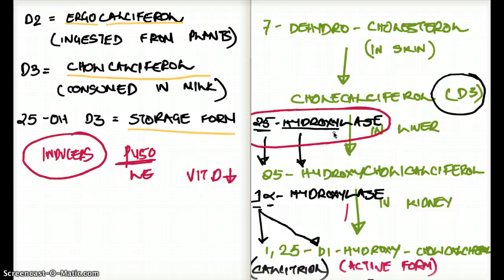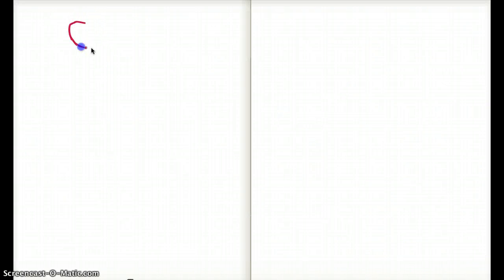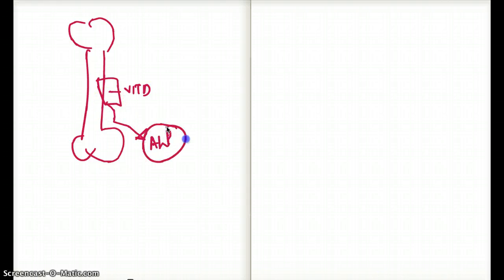The last thing I want to talk about is the relationship of PTH, osteoblast, osteoclast, and vitamin D. Imagine that this is our bone. Vitamin D has receptors in our bone. When vitamin D goes and binds to this receptor, the bone releases alkaline phosphatase, and we pick it up in the serum, in the test from our serum.